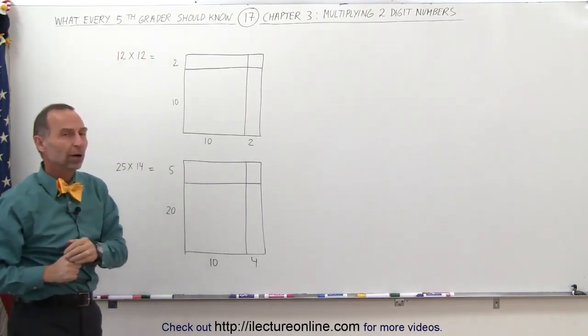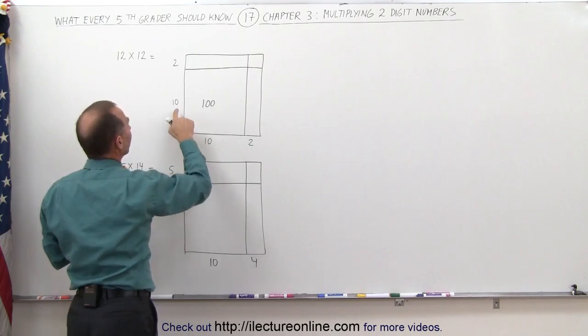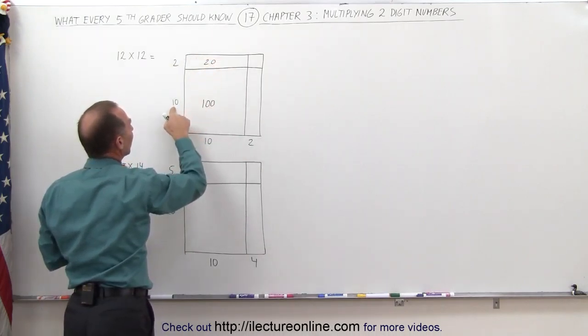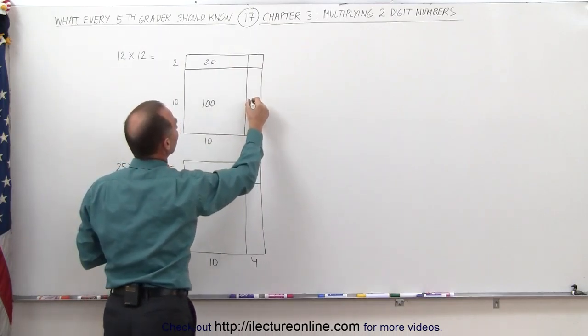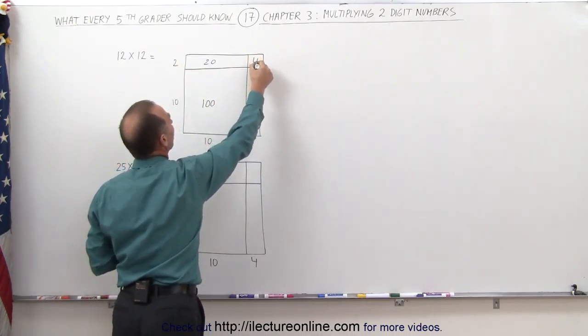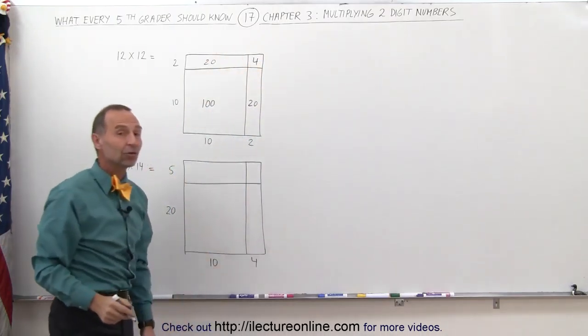If I multiply 10 times 10, I get 100. If I multiply 10 times 2, I get 20. If I multiply this 10 times this 2, I get 20 over here, and multiply this 2 times this 2, I get the number 4. And all we have to do now is add those numbers together.